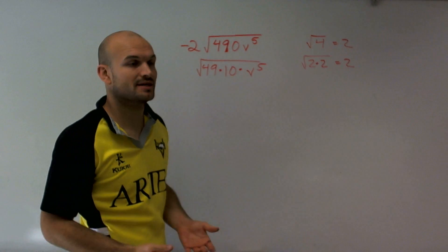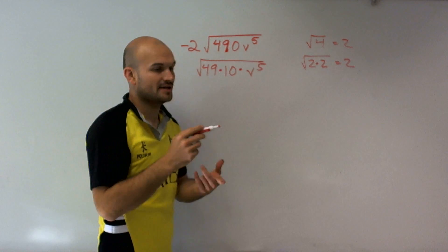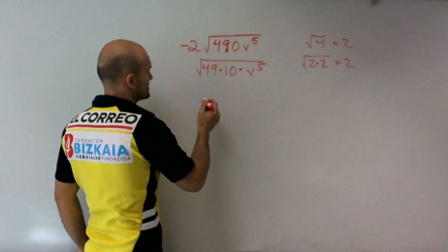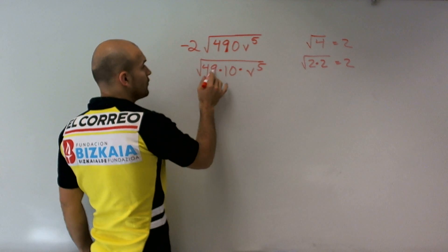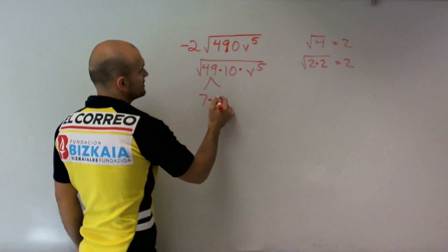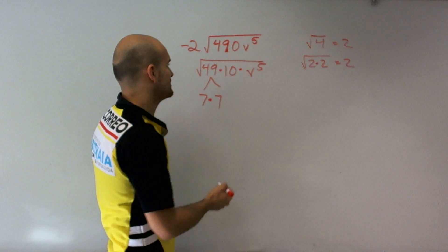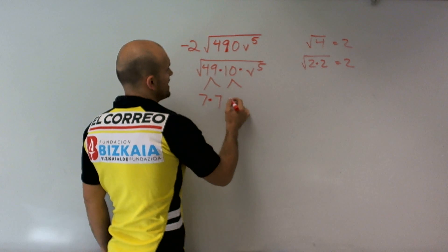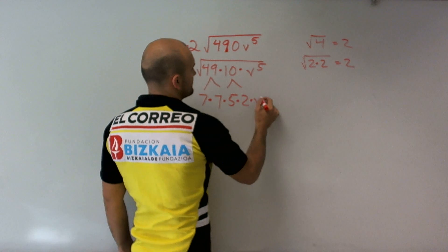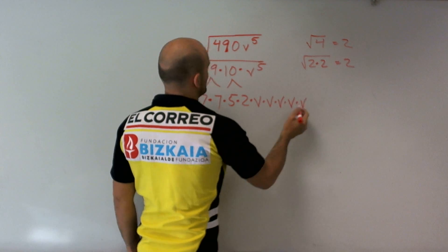Now, b to the 5th is a special case. How can you rewrite that? Well, that can be rewritten as b times b, 5 times. So 49, if we factor that, can be factored into 7 times 7. And 10 can be factored down into 5 times 2, times b times b times b times b times b.